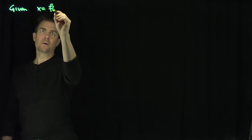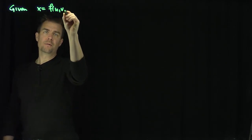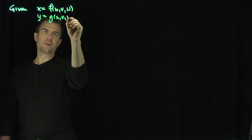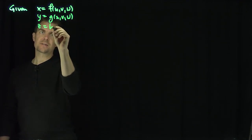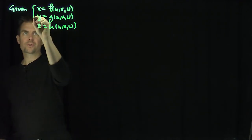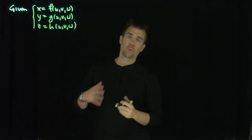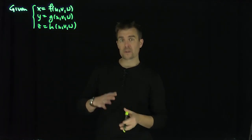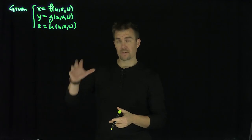Hello, students. In this video, we'll discuss the gradient in curvilinear coordinates. Let's be given x = f(u, v, w), y = g(u, v, w), and z = h(u, v, w) — a coordinate transformation. We're going to assume this coordinate transformation gives rise to orthogonal curvilinear coordinates, and we'll explain what that means when we talk about the gradient of these functions.